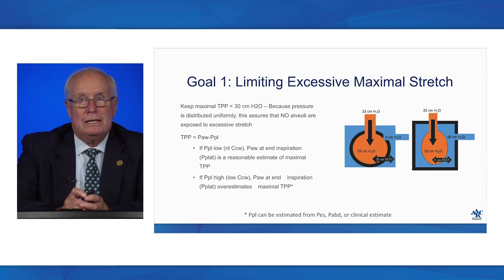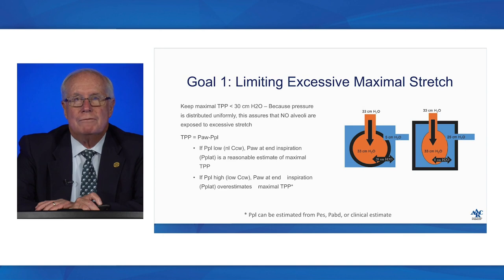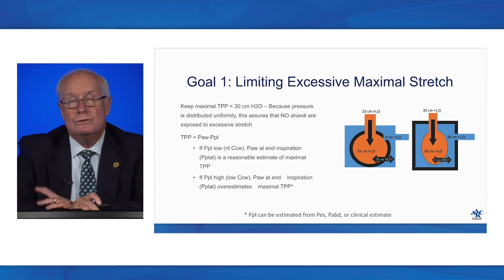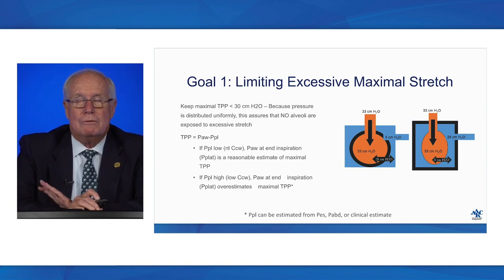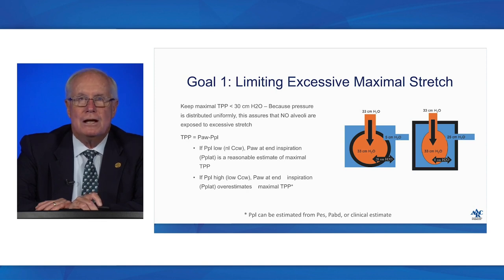We need to measure or at least account for chest wall effects. For the obese patient on the right, 33 cmH2O in the alveoli is mostly from a stiff chest wall — the transpulmonary pressure is only 8 cmH2O. We can make estimates of pleural pressure, but in thinking about limiting excessive maximal stretch, we want to limit the maximal transpulmonary pressure, and we estimate that from our plateau pressure while taking into account the possibility that the chest wall may be complicating that measurement.